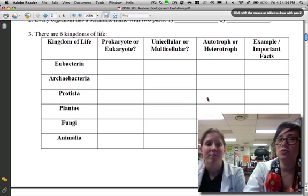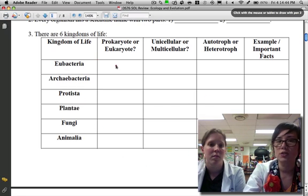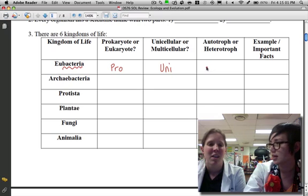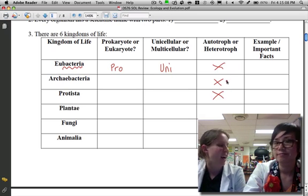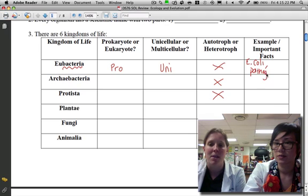Number three. We have this huge chart. If you know this chart, you pretty much know everything you need to know about the six kingdoms of life. Let's start with eubacteria and work our way across. Are they prokaryotes or eukaryotes? I see this word bacteria, so they are prokaryotes. If they're bacteria, they're small, so they are unicellular. Eubacteria are kind of odd in that they can do both autotroph or heterotroph. We're going to put an X for these first three because all three can kind of do either one. An example of eubacteria: we could put E. coli. One important fact is that they can be pathogens, which means they can make you sick.